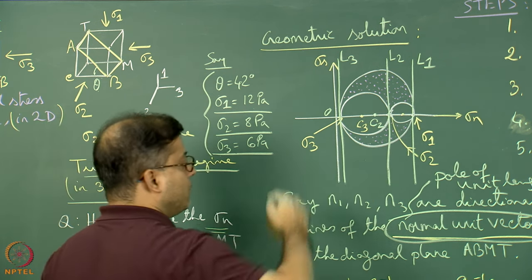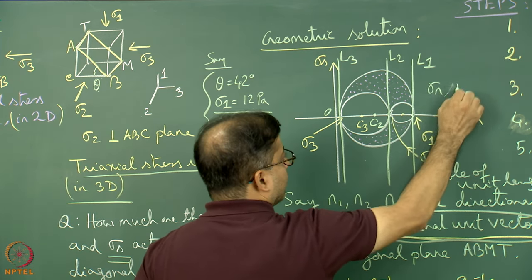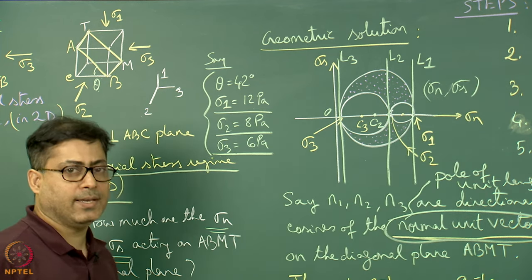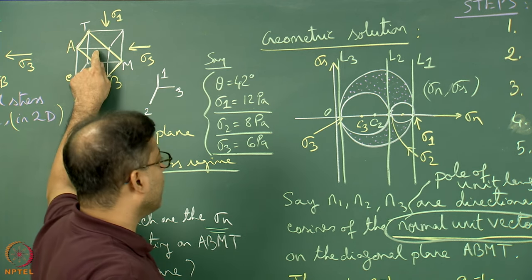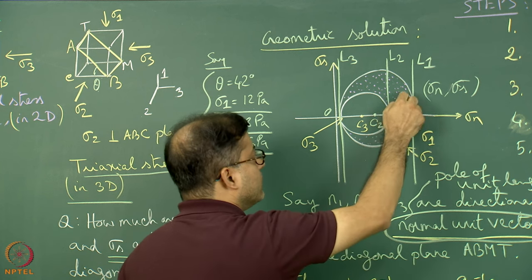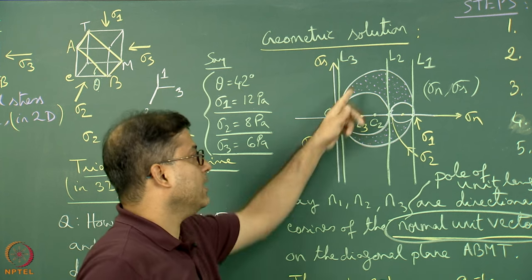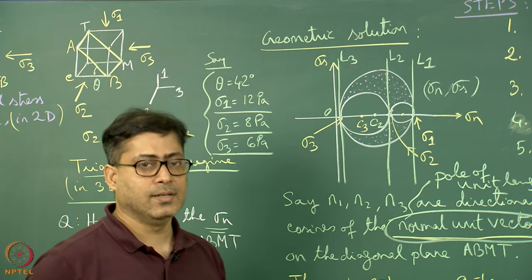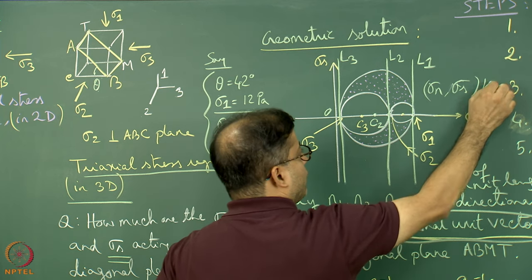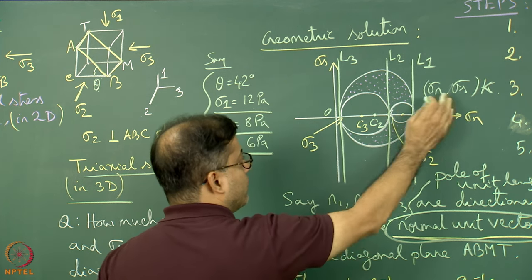The dotted region bounded by the three circles is where the sigma_n and sigma_s point lies. The sigma_n and sigma_s acting on the diagonal plane will be plotted as a point K somewhere within this dotted region. From the coordinates of K, the x-coordinate gives sigma_n and the y-coordinate gives sigma_s.